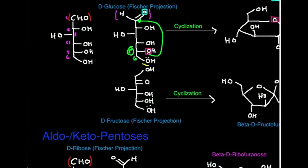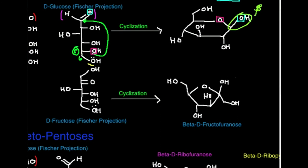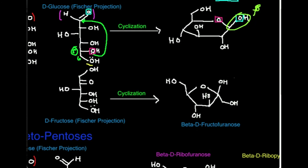Now let's look at the same thing for a ketohexose — fructose. Fructose is most stable in a five-membered ring. The atom that is going to do the attacking is the oxygen at position five, just like it is on glucose. This oxygen attacks the ketone carbonyl, and that ultimately leads to cyclization.